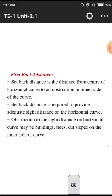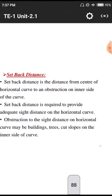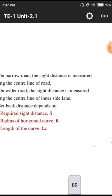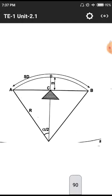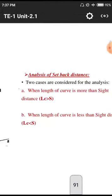The setback distance was also discussed in the previous class. This is the setback distance diagram, where m is the setback distance length. This m value was calculated in the previous class.